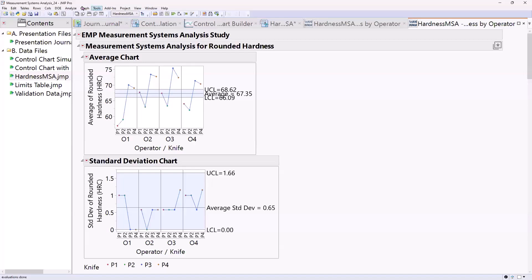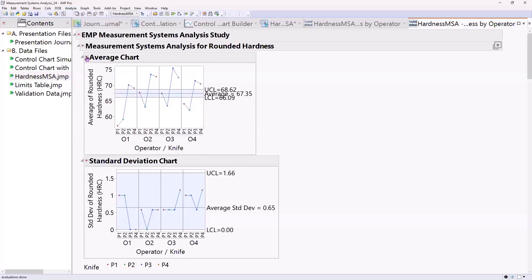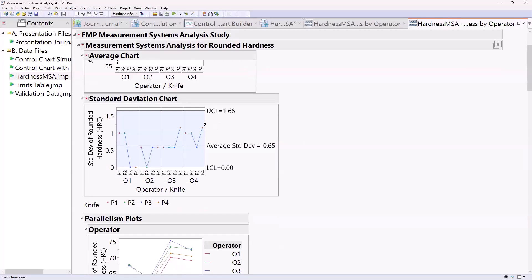You can get the same chart through analyze, quality and process, variability attribute gauge. In fact, even here I could turn on the points and it would look very similar to those other reports.